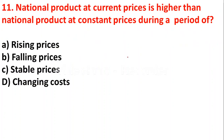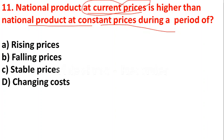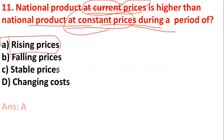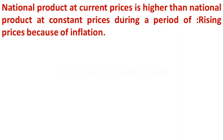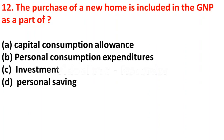Question 11: National product at current prices is higher than national product at constant prices during the period of — A) rising prices, B) falling prices, C) stable prices, D) changing cost. The answer is A — rising prices, that is inflation. The national product is increasing at current price because of inflation. National product at current prices is higher than national product at constant prices during the period of rising prices.